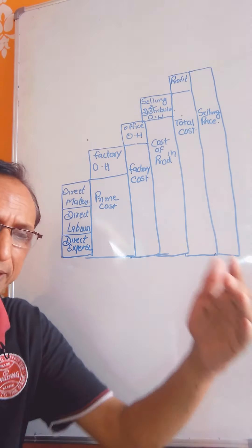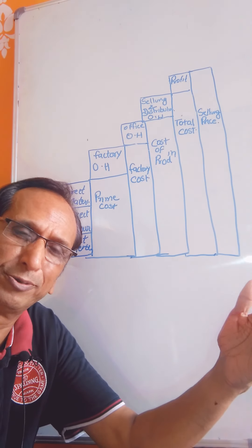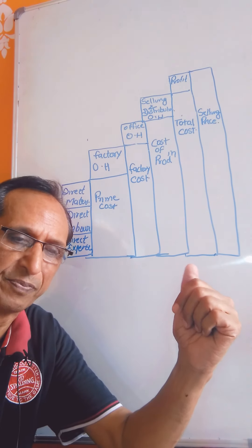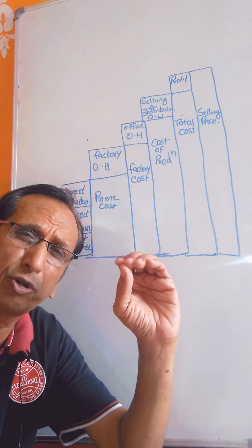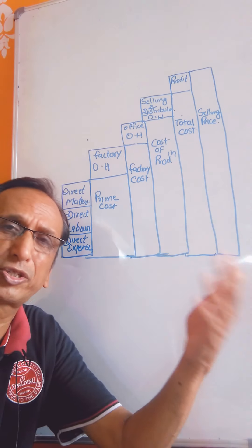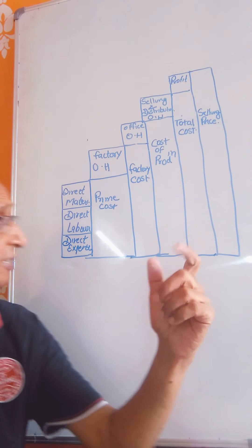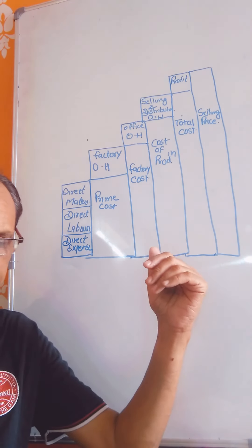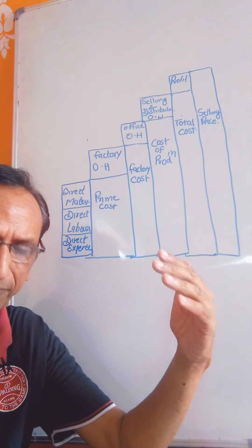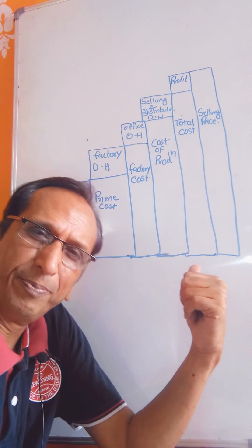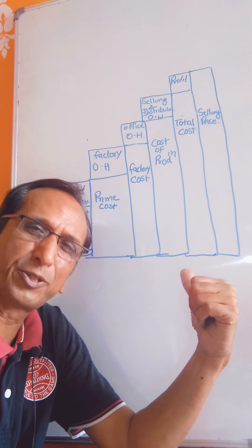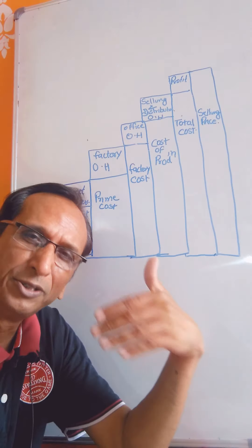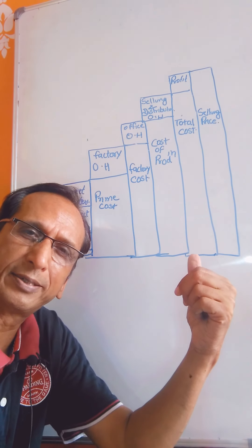So friends, I hope that the concept of prime cost is clear to you. Prime cost comprises all direct material, direct labour, and direct expenses; it is also named as prime or flat cost. The works cost, also called the cost of manufacture, is prime cost plus factory overhead. I hope that with this video you feel empowered with confidence. Thank you friends, have a nice day.